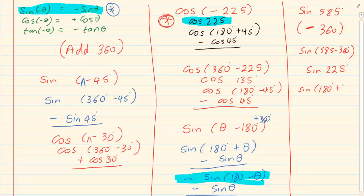I know it is in the third quadrant. So it is sin 180 plus 45. That becomes negative sin 45 degrees.